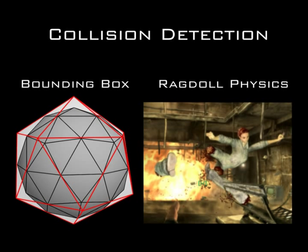Some games use ragdoll physics combined with collision detection, which creates a more realistic environment. Ragdoll physics allows a player or object to become completely limp and simulate actual physics in real time. Before that, there were only preset animations for collisions.